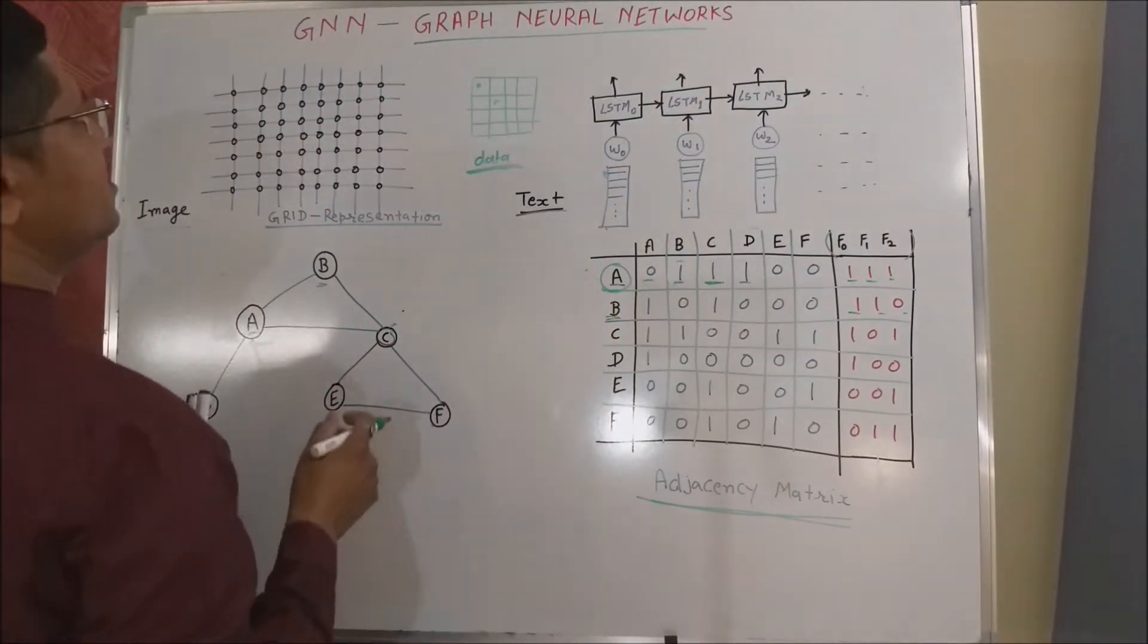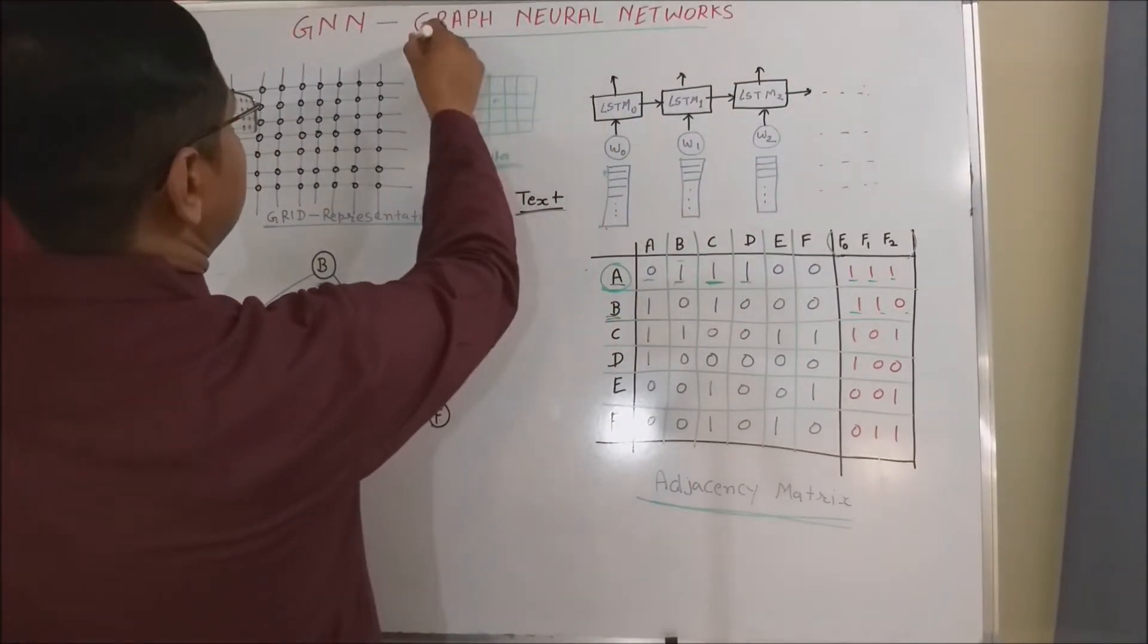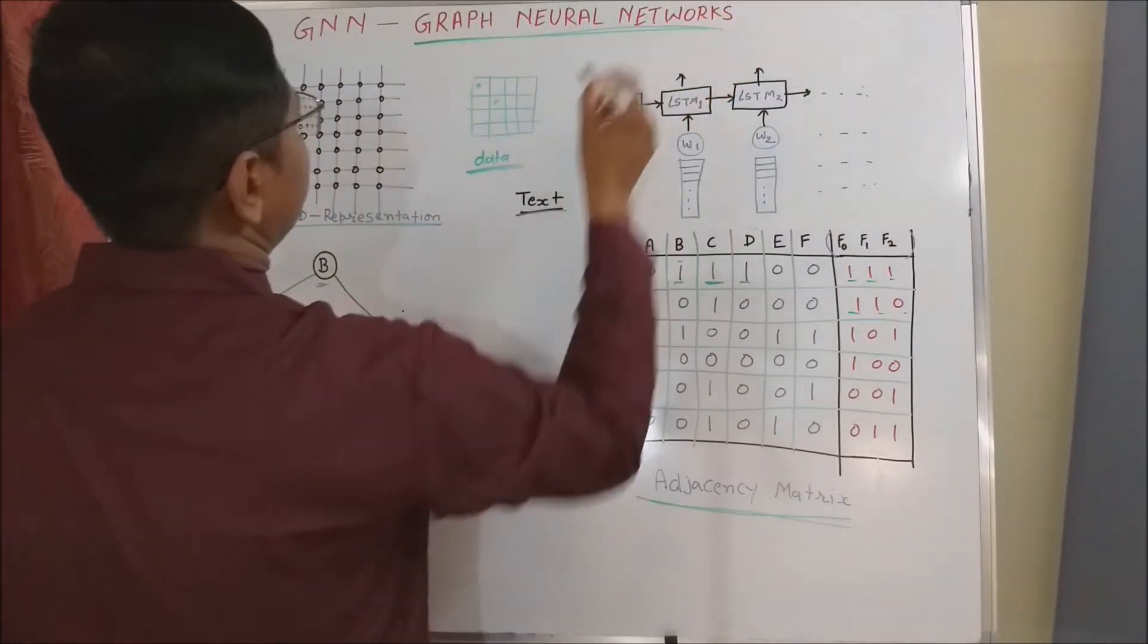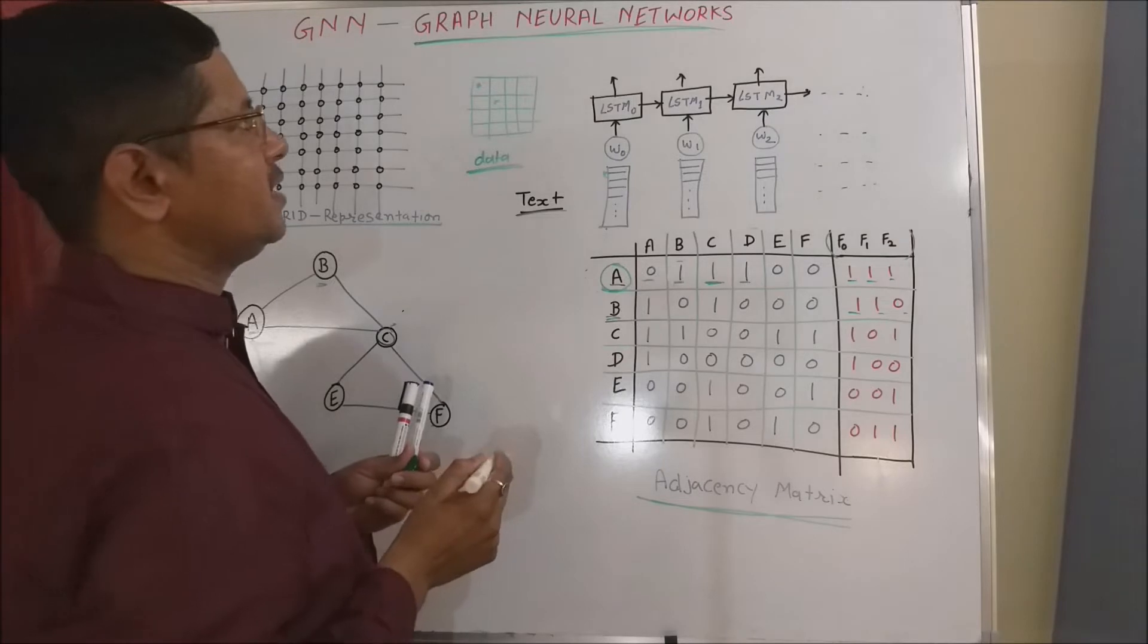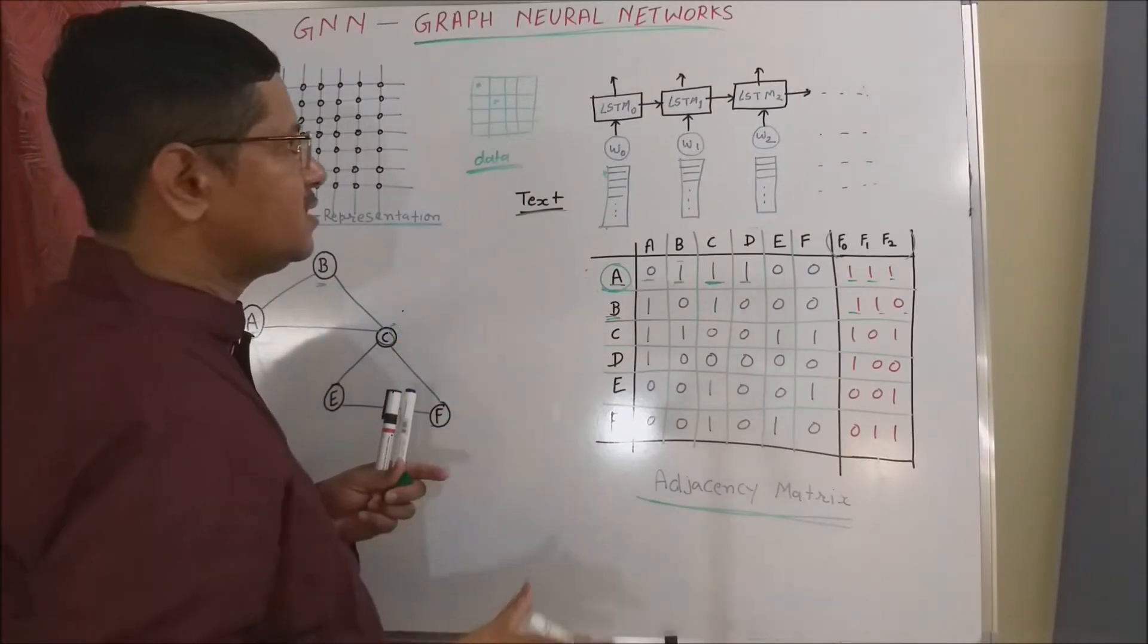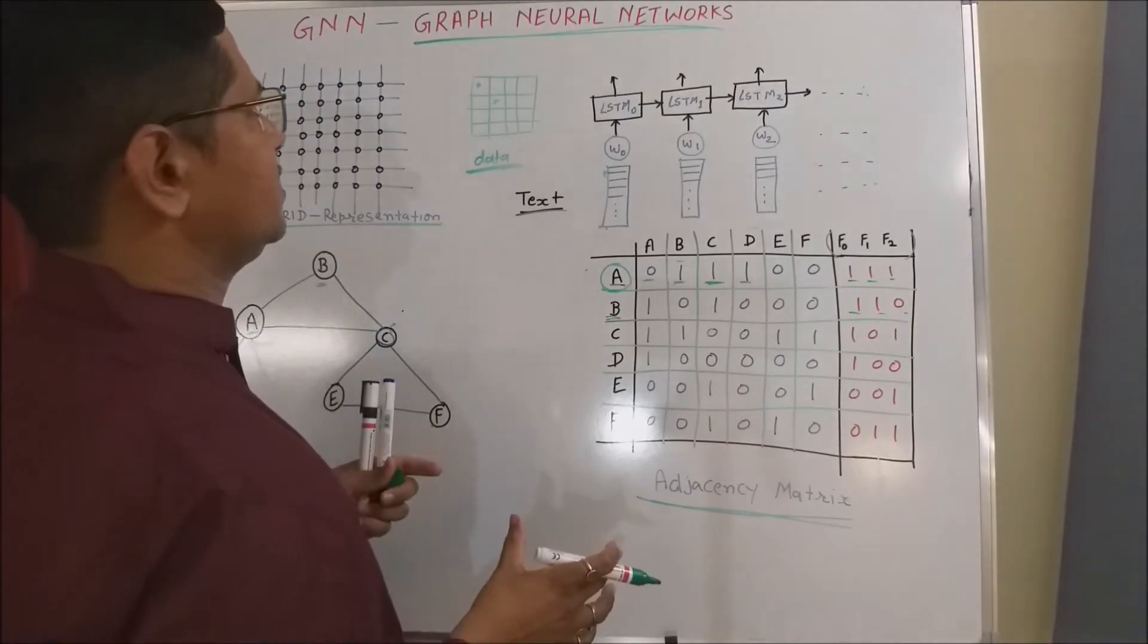The first and important thing that we should consider is why we need the graph neural network architecture. What are the merits and demerits of the traditional deep neural network architectures?